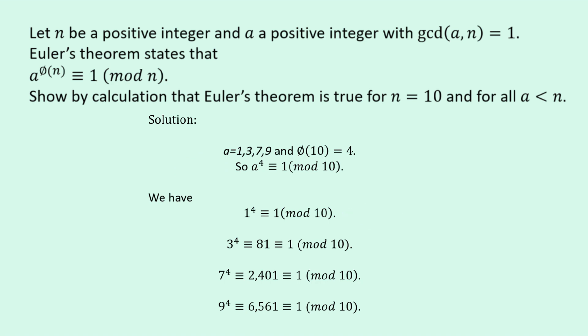1 to the power of 4 is equivalent to 1. 3 to the power of 4 is 81, which is equivalent to 1 modulo 10. 7 to the power of 4 is 2,401, which is equivalent to 1 modulo 10. And 9 to the power of 4 is 6,561, which is equivalent to 1 modulo 10.